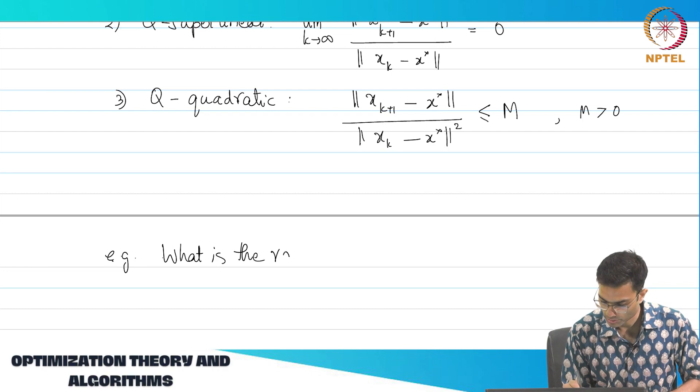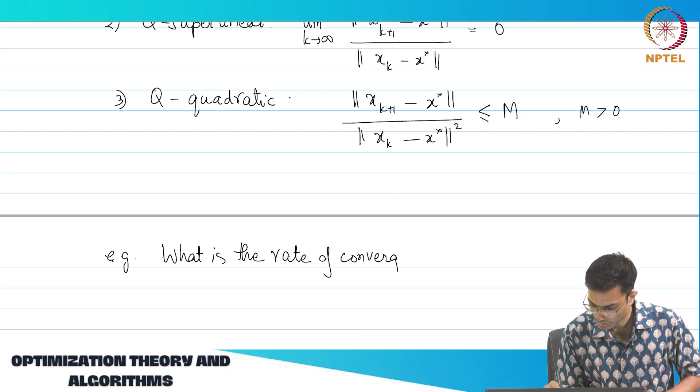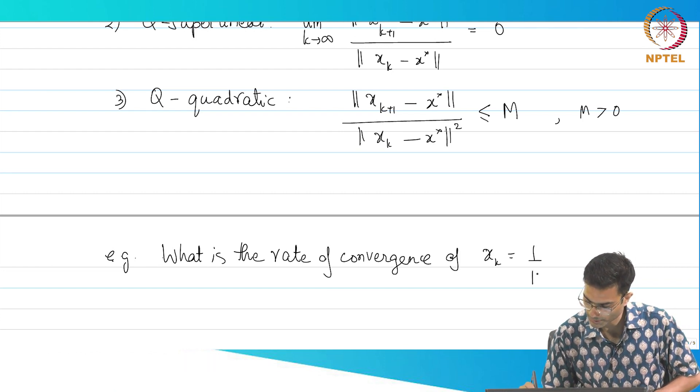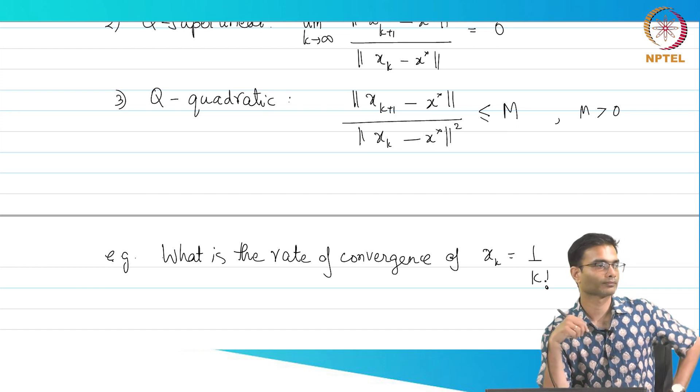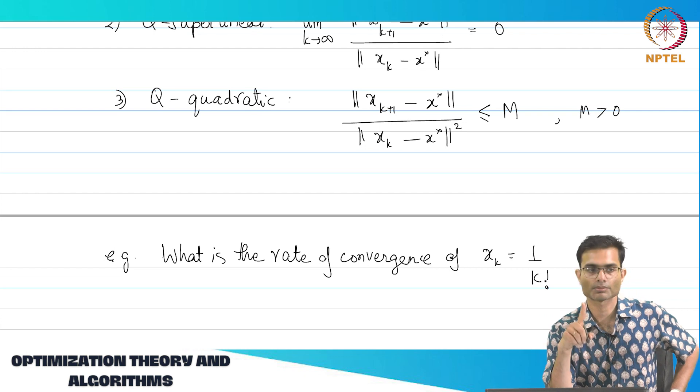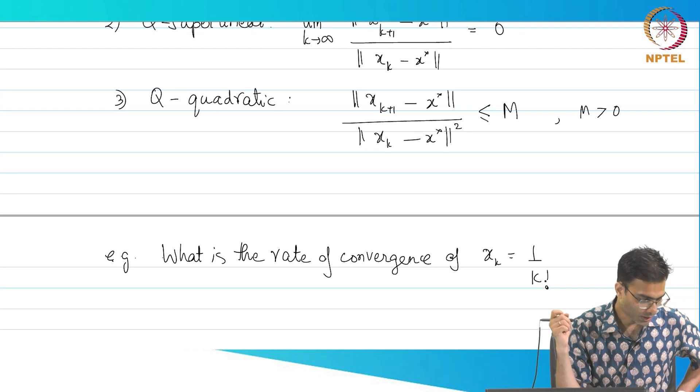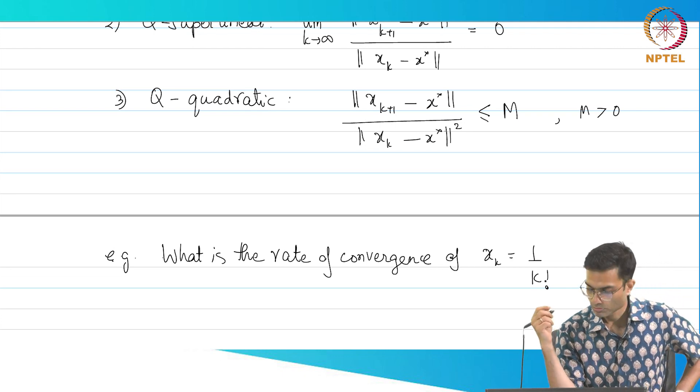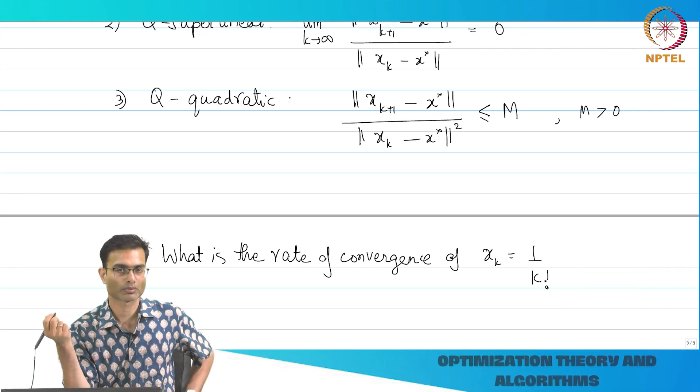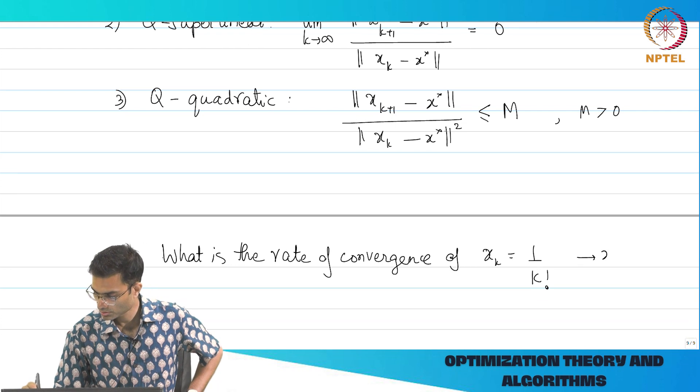Let us work this out of the sequence x_k equals 1 by k factorial. So I am giving you a sequence, right? The first term is 1, then 1 by 2, then 1 by 6 and so on, k factorial. So what is x star for this sequence? Zero. Very intuitively it is clear that x star is equal to 0, right?